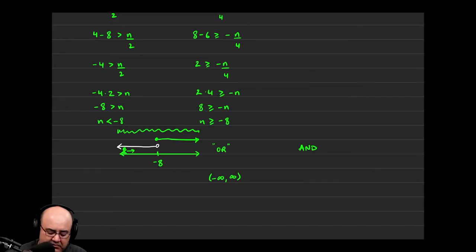So this would actually have no solution. So you would either write no solution, or you can write this Greek symbol phi. That means no solution.